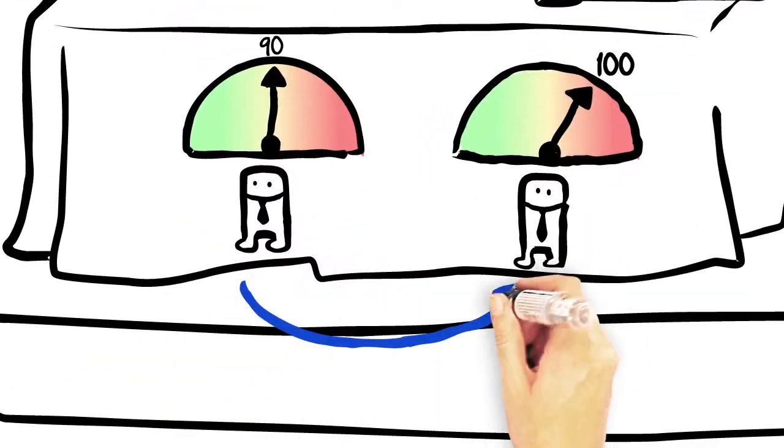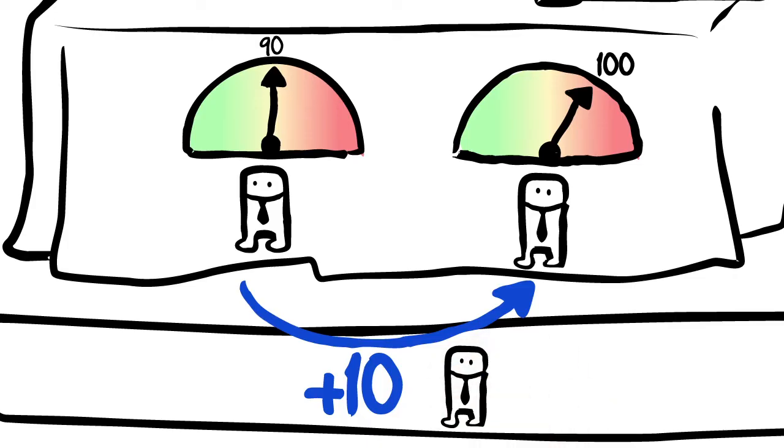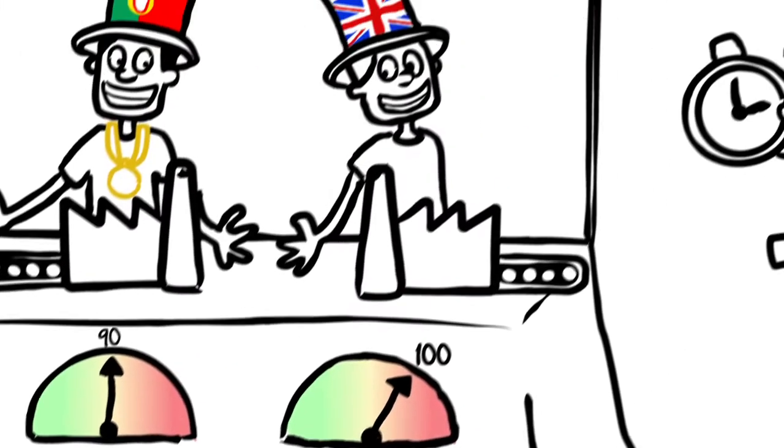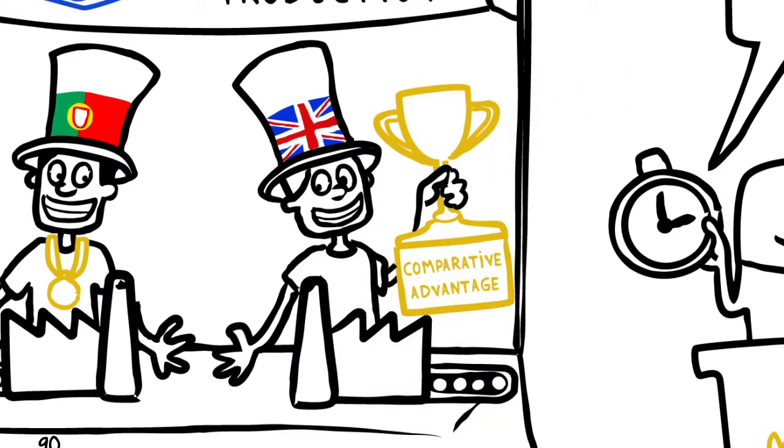Indeed, that is where the productivity gap is the least large, since it needs 10 people more to produce a piece of cloth. So it benefits from a comparative advantage in this field.